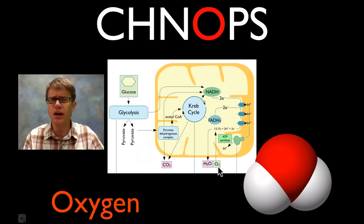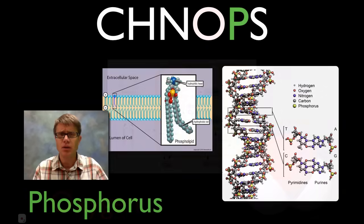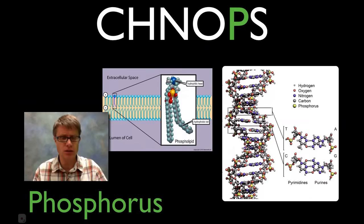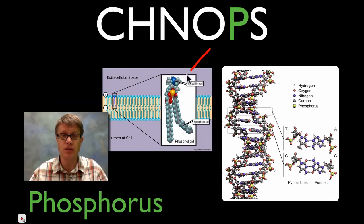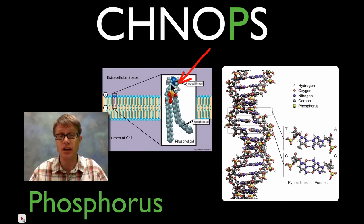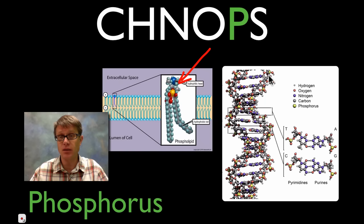Phosphorus — why do we need phosphorus? Well we need phosphorus for a few reasons. Number one, this would be a phospholipid — that makes up our lipid bilayers and it's going to have a phosphate in its head. If we look on the DNA right here, on the DNA we're going to have...